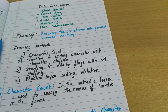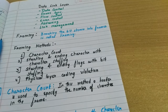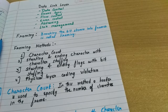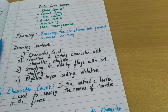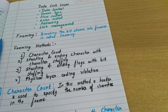A very important function of the data link layer is framing. Framing means if we have a very long bitstream, we break it into frames. Breaking this bitstream into frames is called framing. We have many methods to discuss for framing.